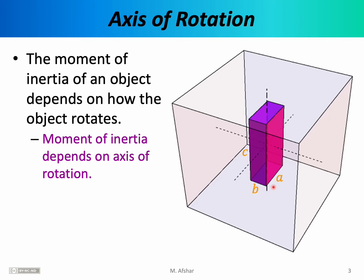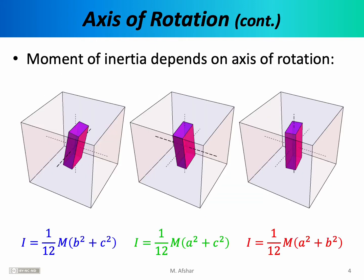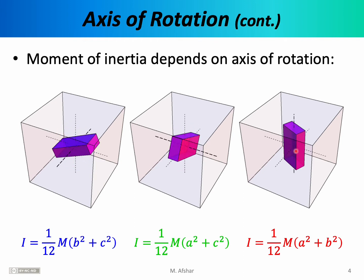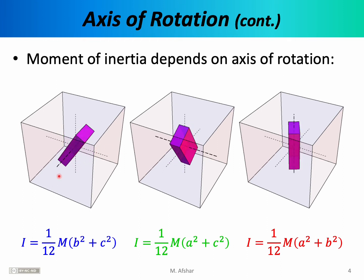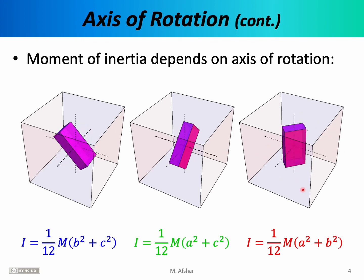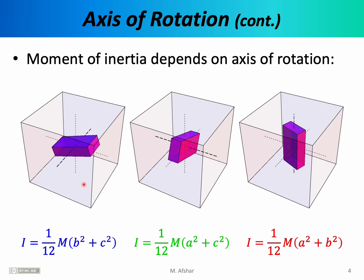There are many different ways that this object can be rotated. We can imagine rotating this box relative to the x-axis, the y-axis, or the z-axis. In these animations you can see the object rotating in three distinct ways. In each animation we have exactly the same box with the same mass and the same dimensions, but on the left we're rotating it around the x-axis, in the middle around the y-axis, and here around the z-axis.